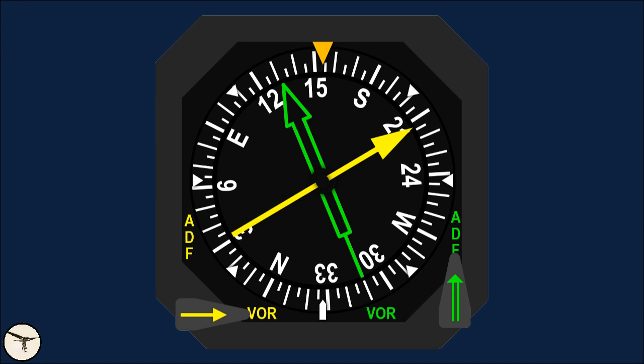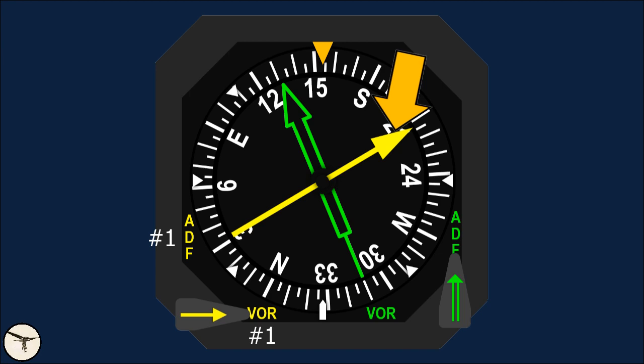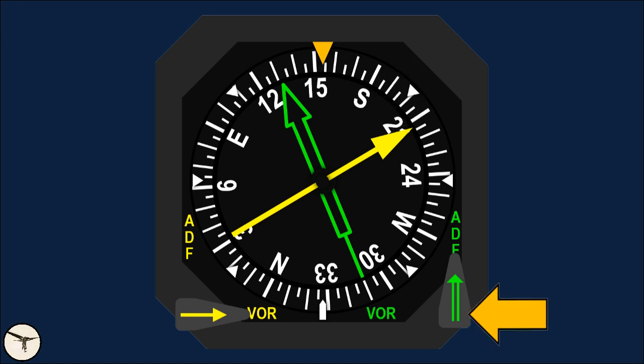The RMI has a compass rose showing magnetic heading and two pointers showing either VOR or ADF bearings. Each pointer has a selector to switch between VOR and ADF. The left-hand selector is for VOR1 or ADF1 and has a yellow pointer. The right-hand selector is for VOR2 or ADF2 and has a green pointer.